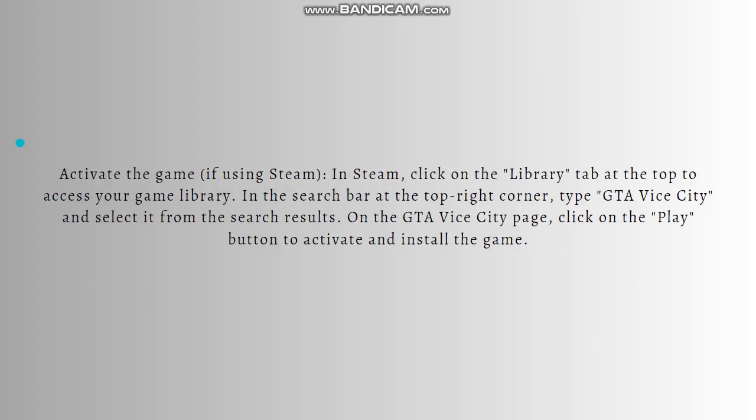Next is to activate the game. If you are using Steam, do this process. In Steam, click on the Library tab at the top to access your game library. In the search bar at the top right corner, type GTA Vice City and select it from the search results. On the GTA Vice City page, click on the Play button to activate and install the game.